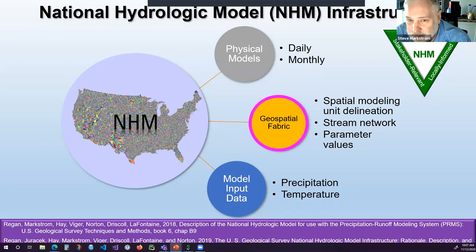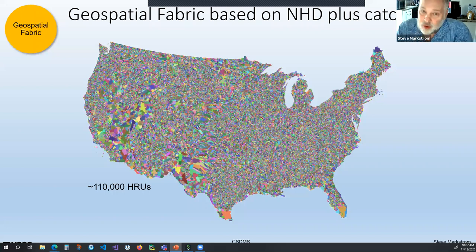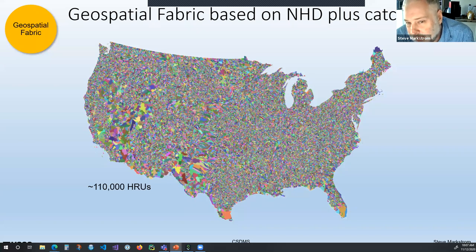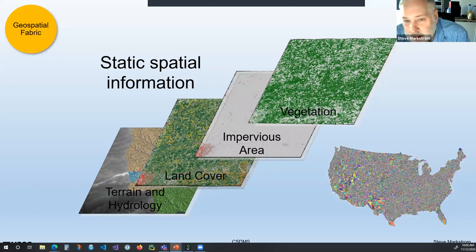The first thing I'll talk about is the geospatial fabric — basically how we define space for this national model. Some of you may know what the NHDPlus catchments are. We defined the left and right bank contributing areas — the watershed contributing areas to each stream segment — as our definition of space. There are way more than 100,000 HRUs or spaces in our watershed model of the lower 48. We only used land cover, vegetation, and DEMs that had the full extent of CONUS, and characterized our model with these CONUS-wide data sets.